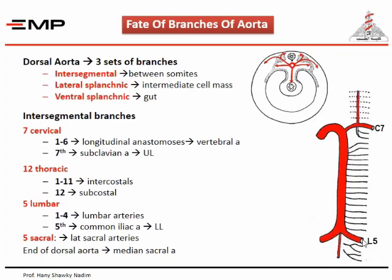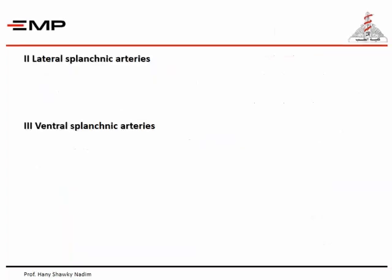After the fifth lumbar intersegmental forms the common iliac, the remaining distal dorsal aorta becomes narrowed, forming the median sacral artery. So the intersegmental arteries form the arteries of the limbs, the intercostal, subcostal, lumbar, and sacral arteries, and the vertebral artery in the neck.